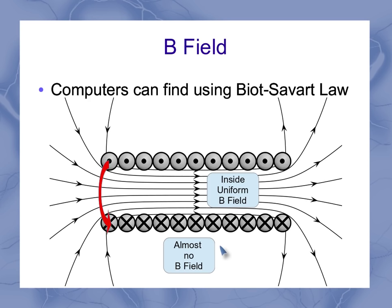Outside the solenoid, there's almost no B field. I say almost because there's a very, very weak one out here.